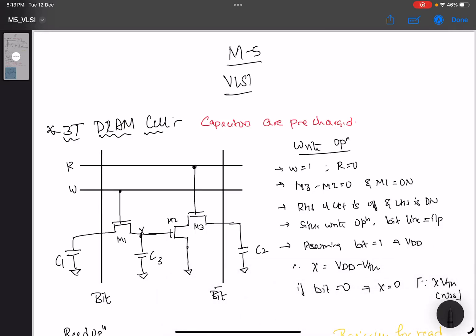3T DRAM cell. 3T DRAM cell is because there are M1, M2, and M3 transistors. That is why it is called a three transistor DRAM cell. It has read and write lines and then bit and bit bar lines along with three capacitors, where C1 and C2 are precharged.